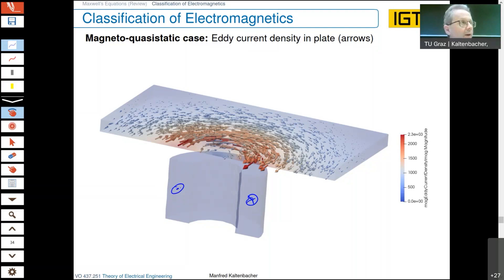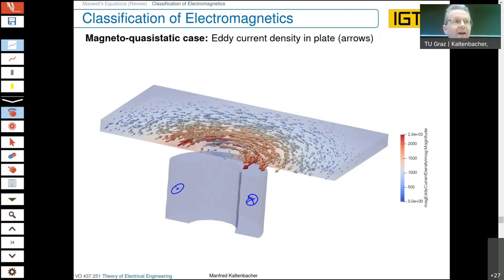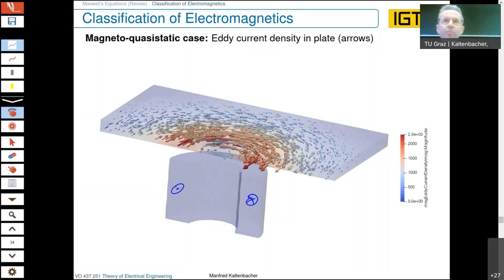The eddy currents go in the opposite direction to generate a magnetic field against the original magnetic field — this is due to Faraday's law and the minus sign in the equation, which is Lenz's rule. This has to be opposite; otherwise the two magnetic fields would add, grow indefinitely, and make no physical sense.